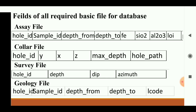In the collar file, the fields are: hole ID, Y (Northing), X (Easting), and Z, which is the collar RL of the borehole. In the Z column, we provide the collar RL of the borehole, maximum depth of the borehole, and hole path. Hole path can be described as linear. In the collar file, the hole path is not a mandatory field — it is used for deviation.